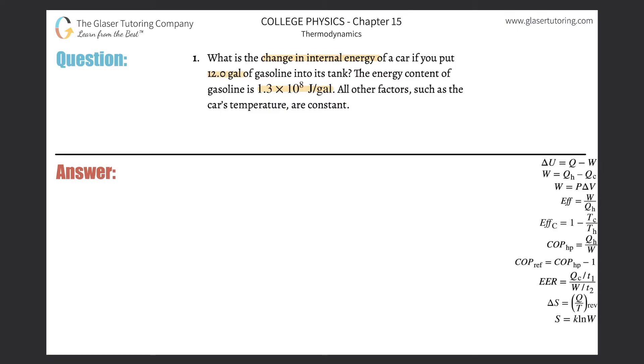So basically, all we need to do is calculate the energy that is inherent inside of this gasoline. And to do that, it's just a simple conversion, right? It's 12 gallons. They told us the energy content per gallon. So this is 1.3 times 10 to the 8 joules per one gallon.